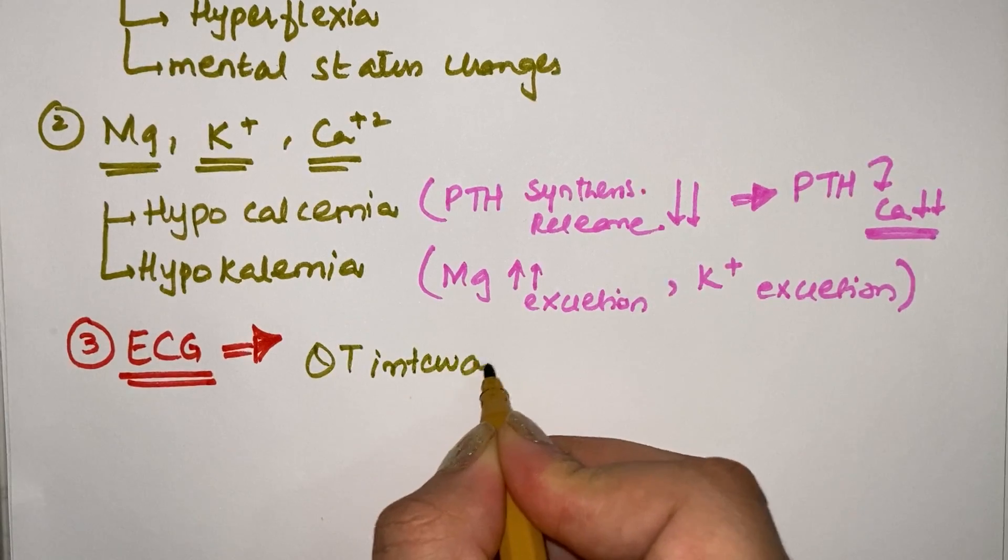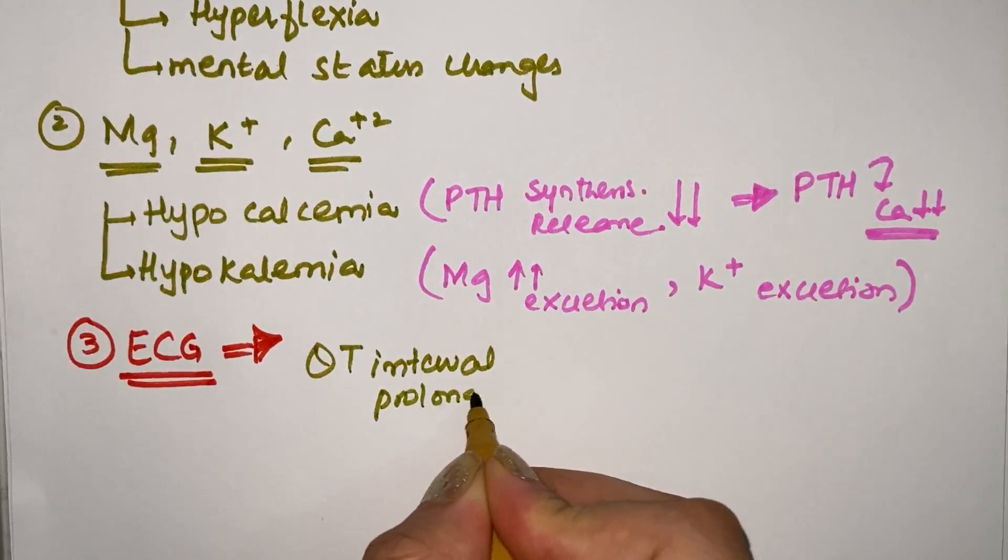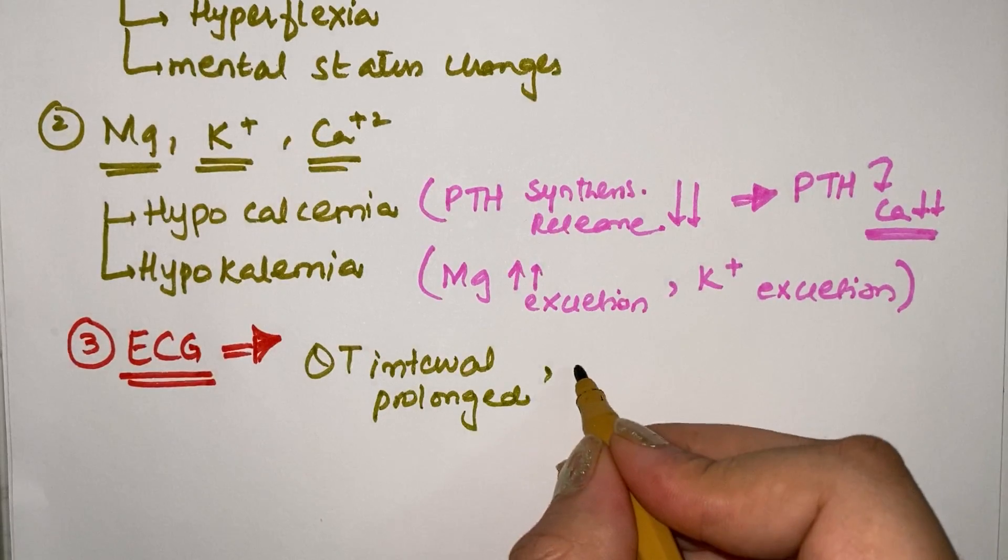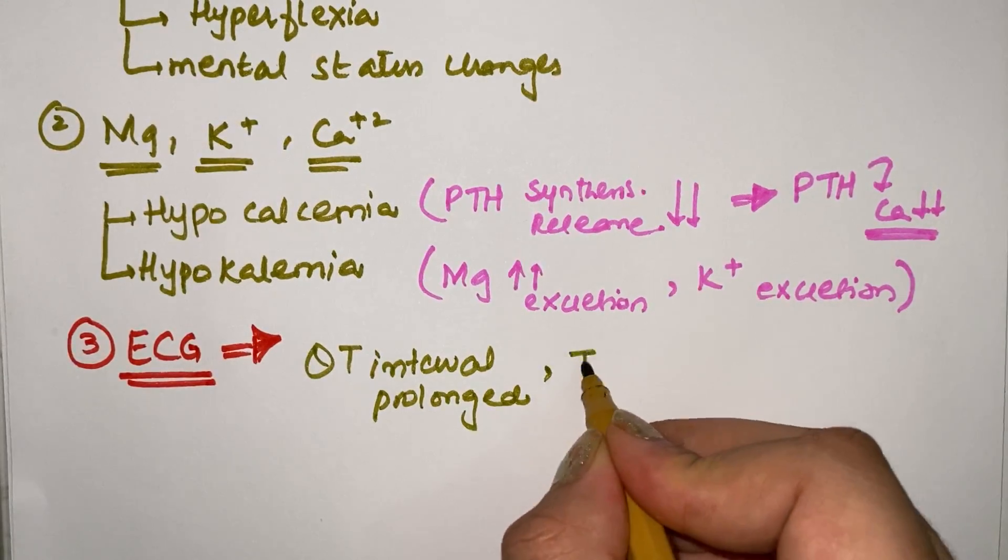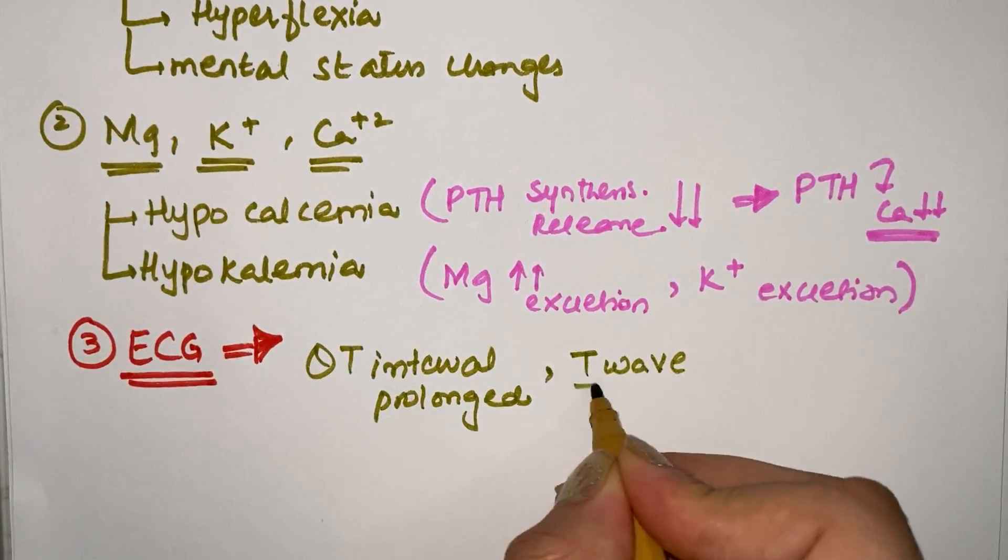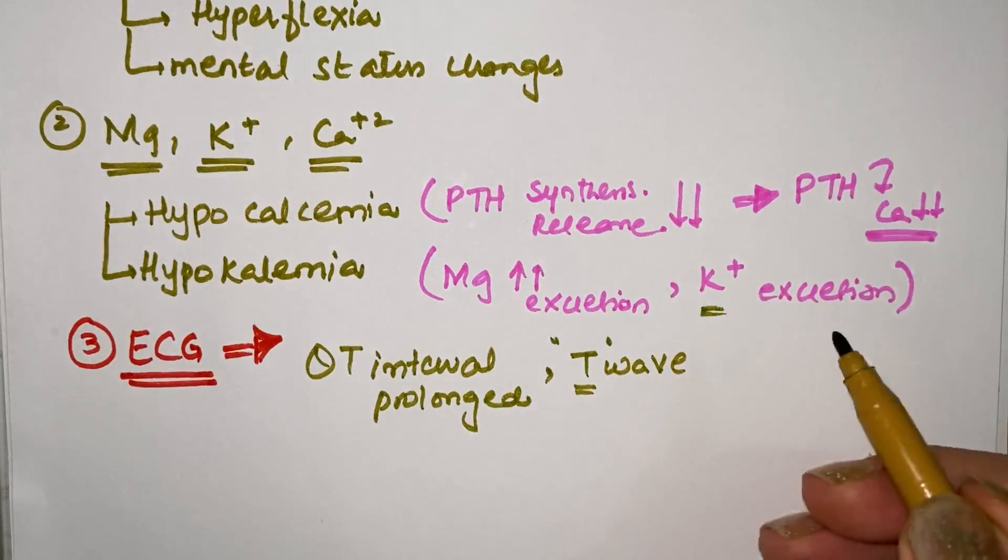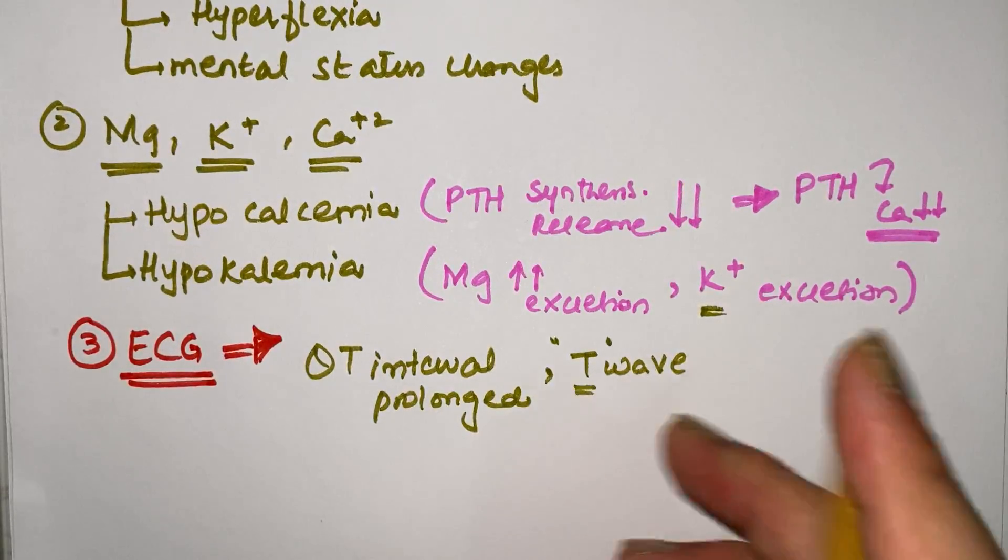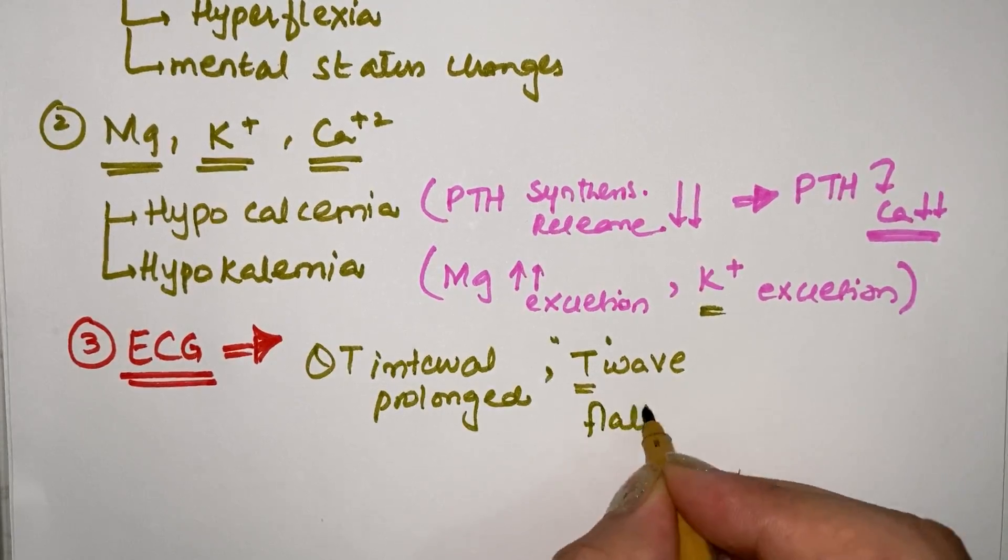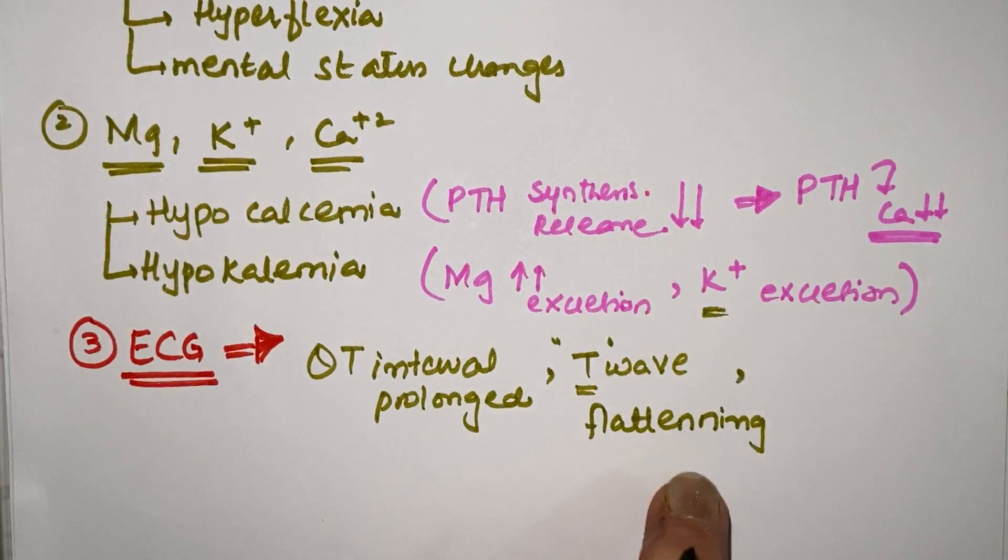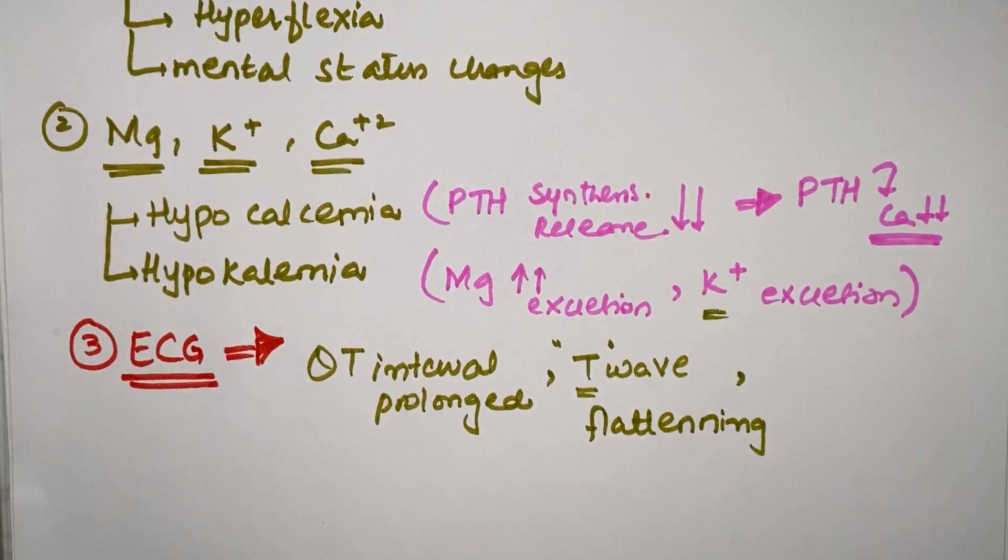What will happen is that the QT interval first of all will become prolonged because heart rate is now decreased. Secondly, the T wave showing ventricular repolarization mediated by potassium, since potassium is low, T wave will be low in amplitude. So T wave flattening will occur.